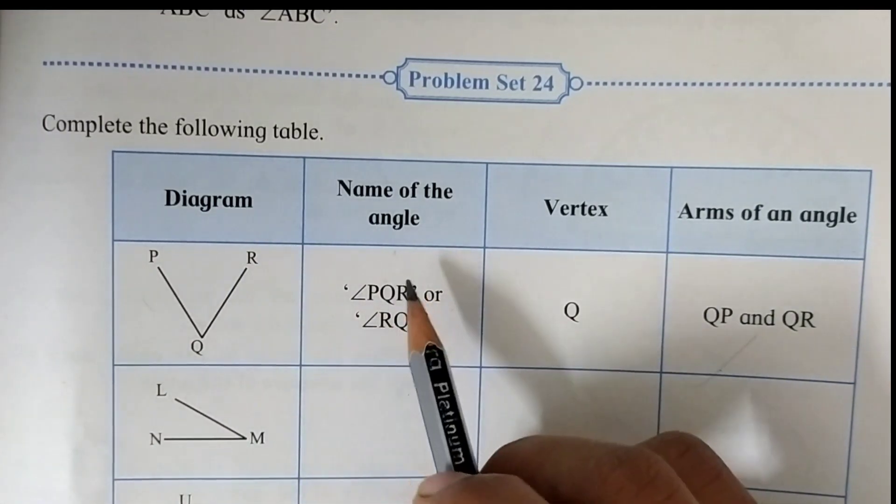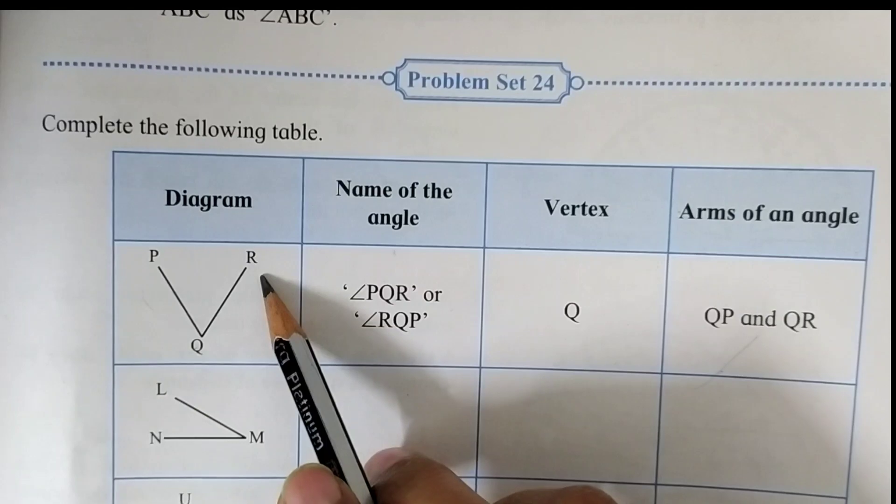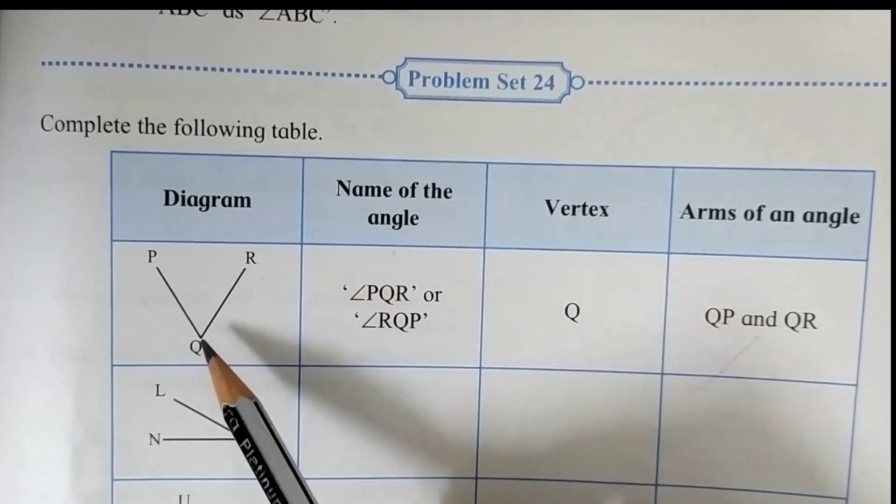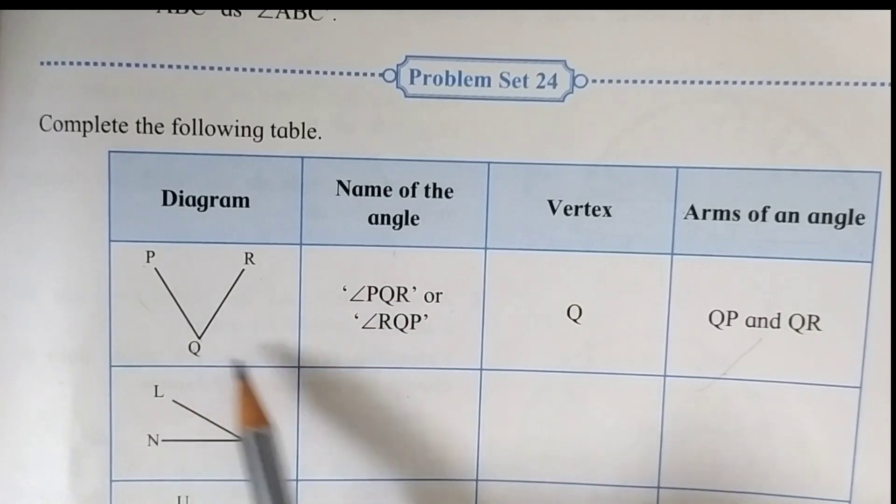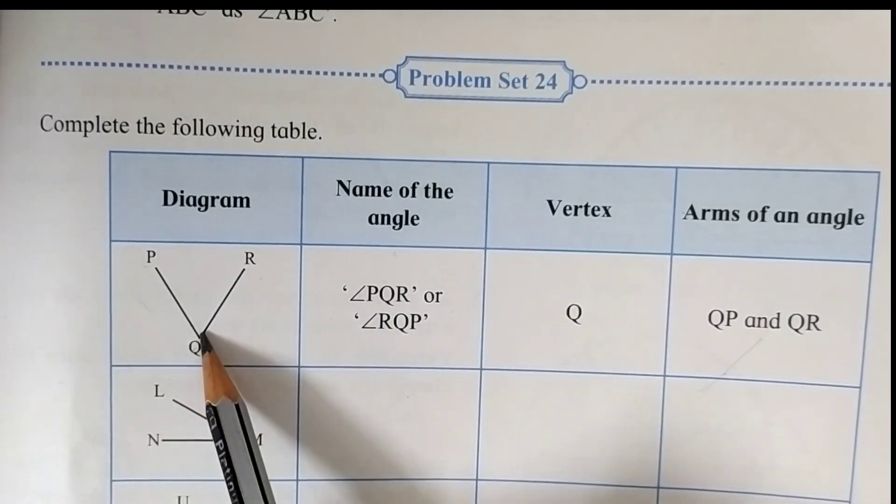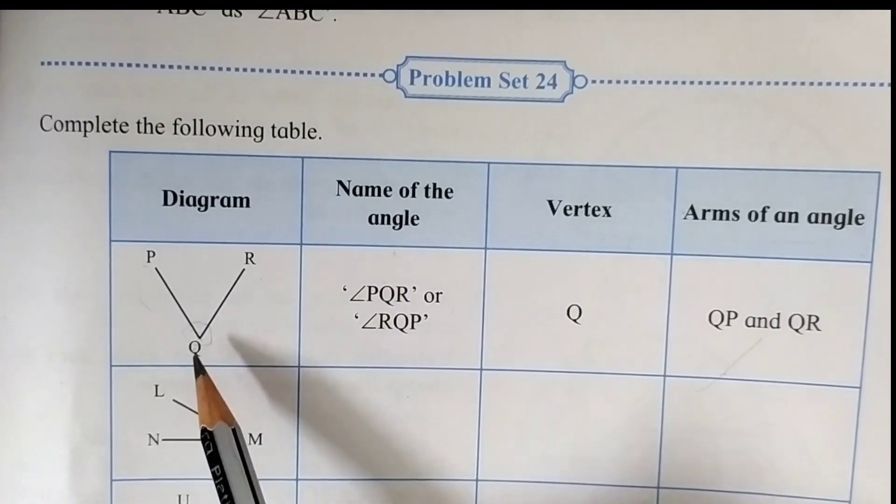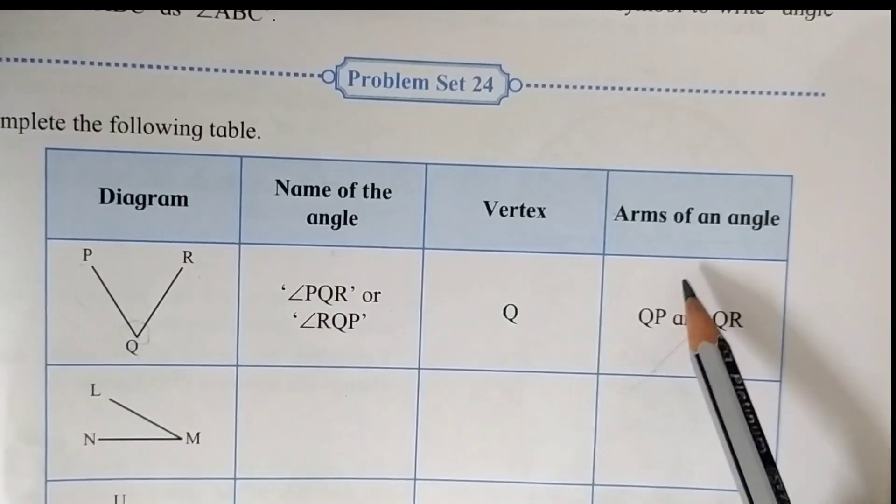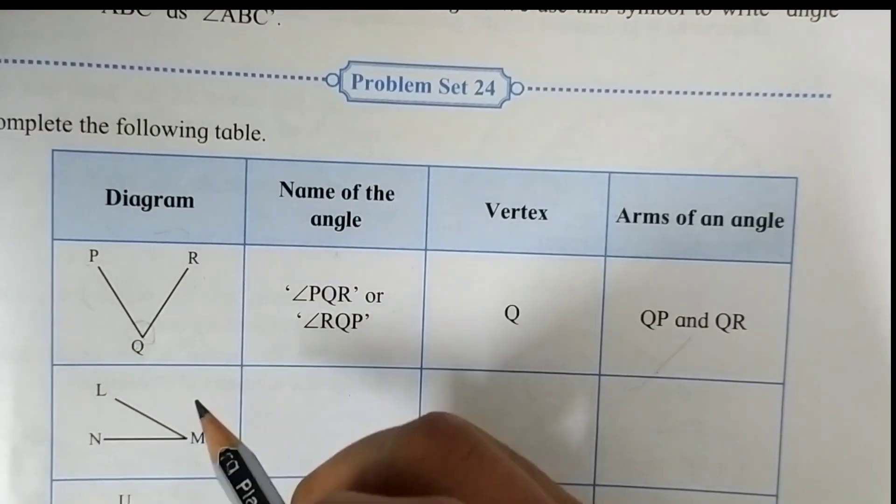This is the solving example. Name of the angle: angle PQR or angle RQP. Here the vertex is Q, two lines are joined here. So this is the vertex and arms of an angle are QP and QR.